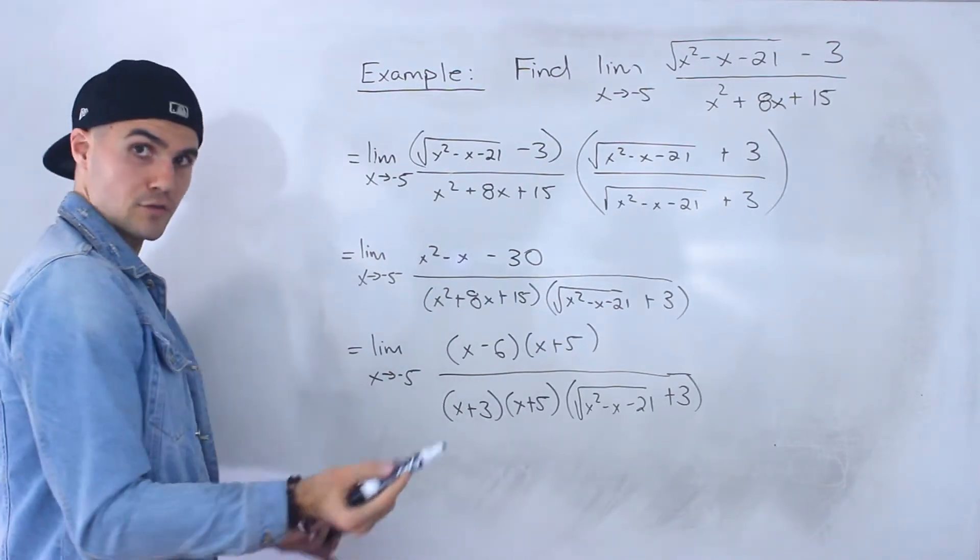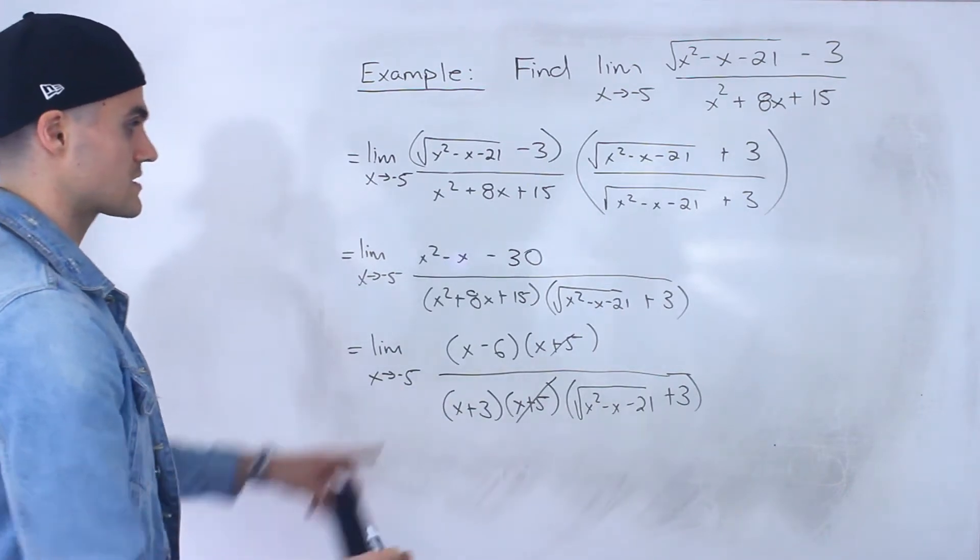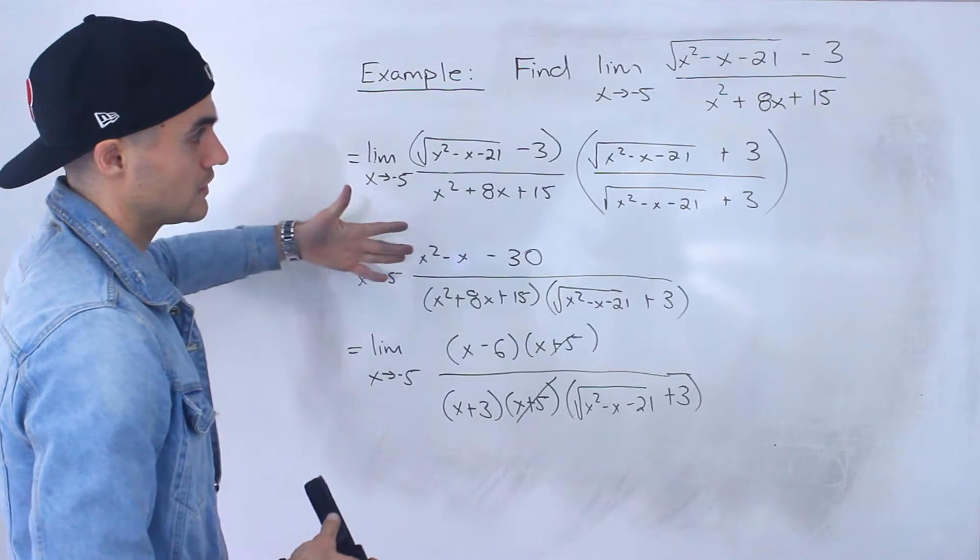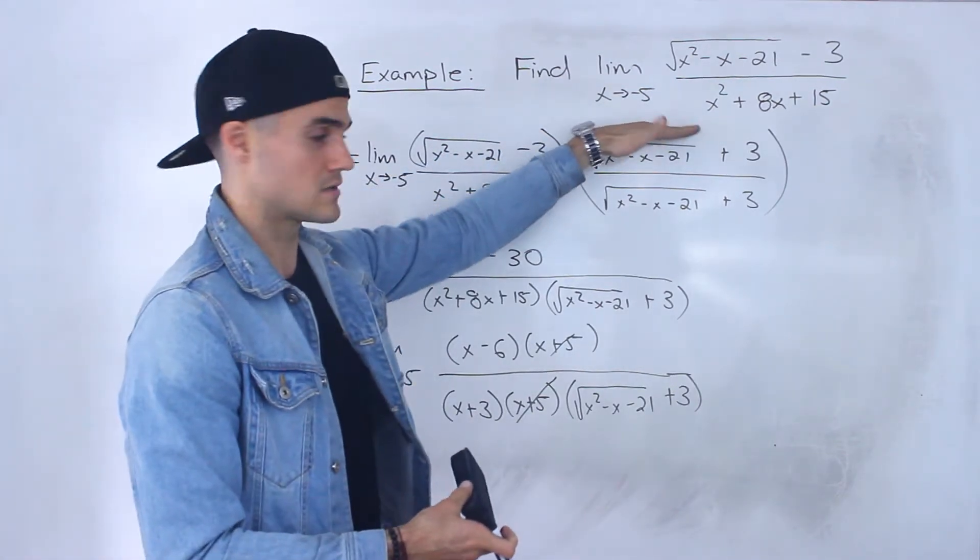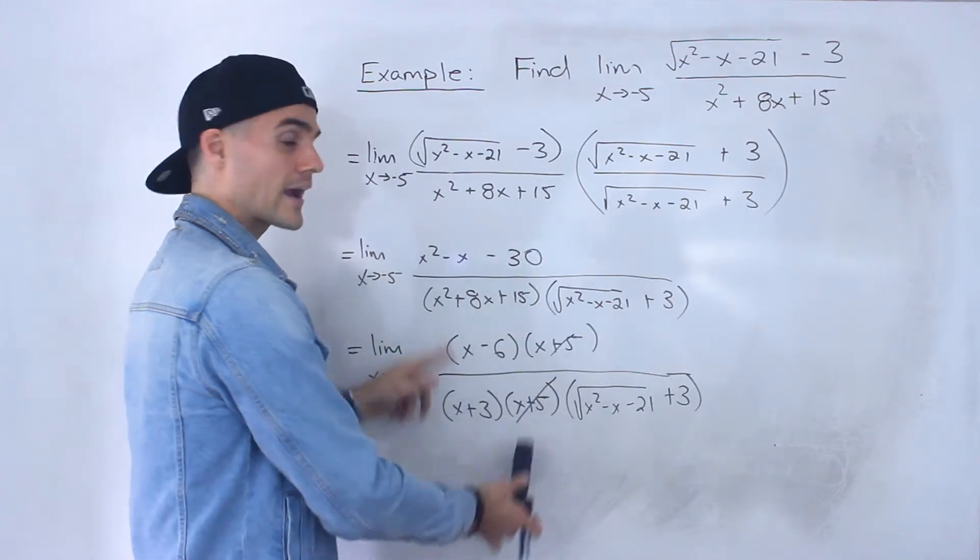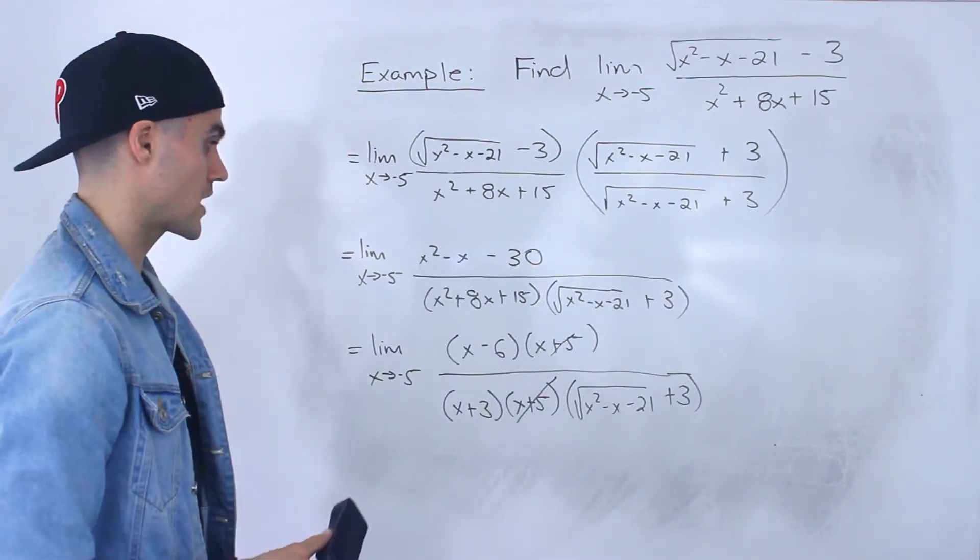And now from here if you notice what happens, the x plus 5s cancel out, and now we can sub in this negative 5. So just an example of a limit where first we have to rationalize, and then after we rationalize we have to factor. An example of where we can combine both strategies.